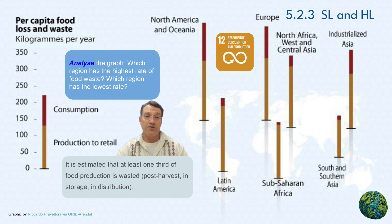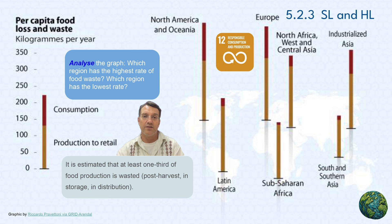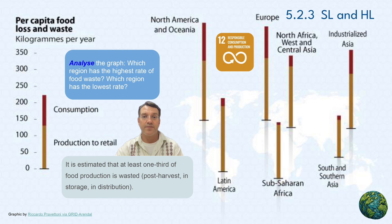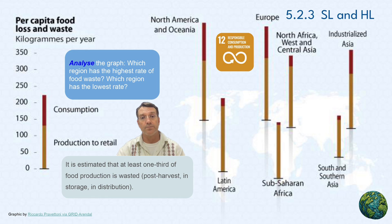Looking at this graph, you can see the stark differences in food waste patterns globally. North America and Oceania have the highest rate of food waste, while South and Southern Asia have the lowest. It's estimated that at least a third of all food production is wasted somewhere between harvest and consumption. This waste happens during post-harvest handling, storage, and distribution, and it represents an enormous inefficiency in our global food system.